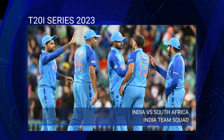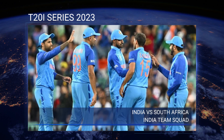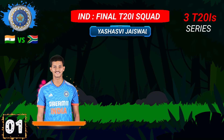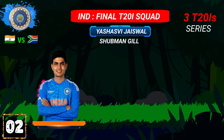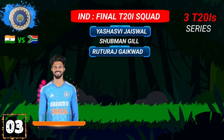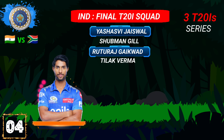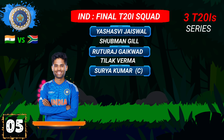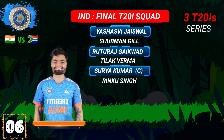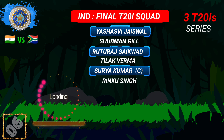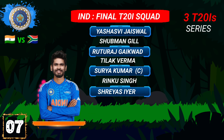Team India Final Squad: No.1 Yashasvi Jaiswal, No.2 Shubman Gill, No.3 Ruturaj Gaikwad, No.4 Tilak Varma, No.5 Suryakumar Yadav, No.6 Rinku Singh, No.7 Shreyas Iyer.